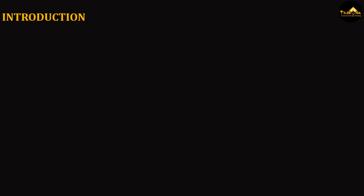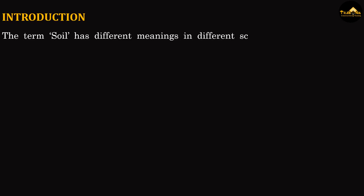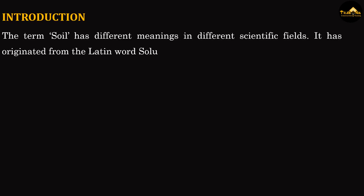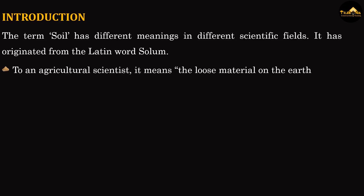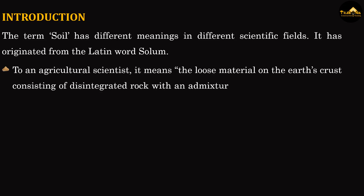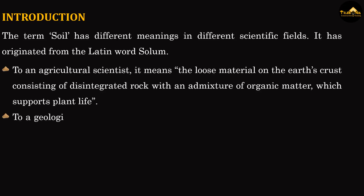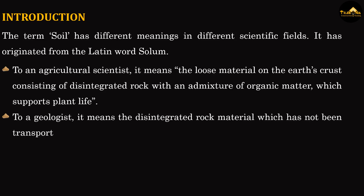The term soil has different meanings in different scientific fields. It has originated from the Latin word 'solum'. To an agricultural scientist, it means the loose material on the earth's crust consisting of disintegrated rock with an admixture of organic matter, which supports plant life. To a geologist, it means the disintegrated rock material which has not been transported from the place of origin.